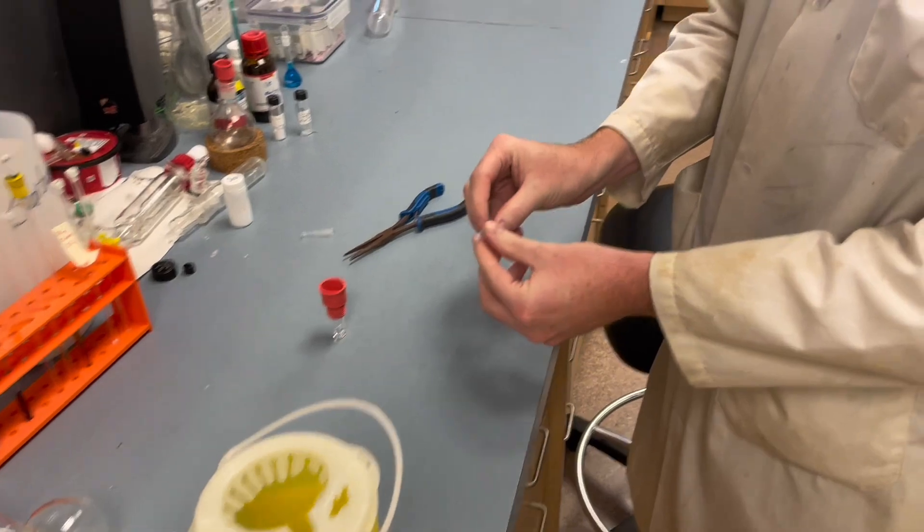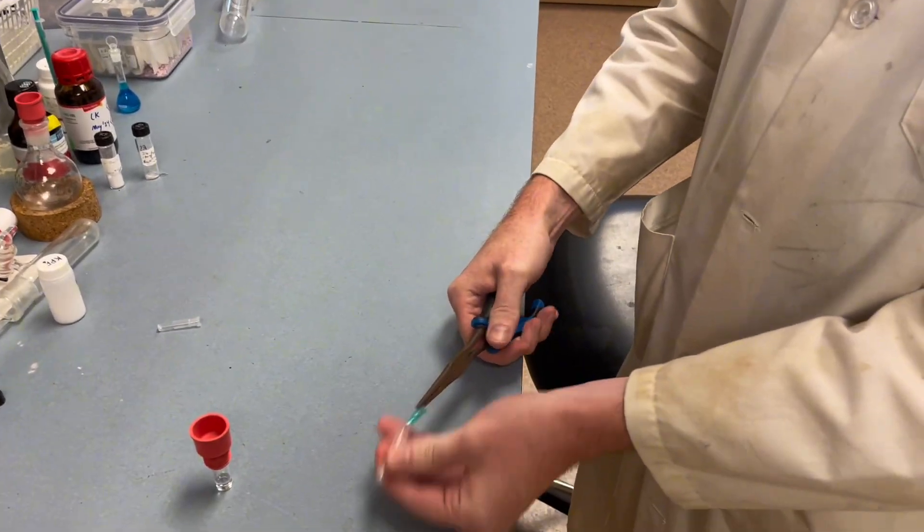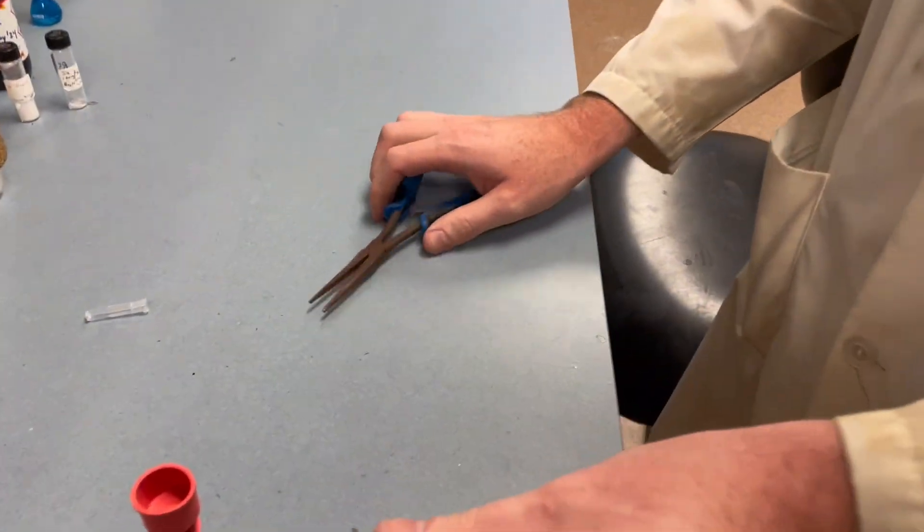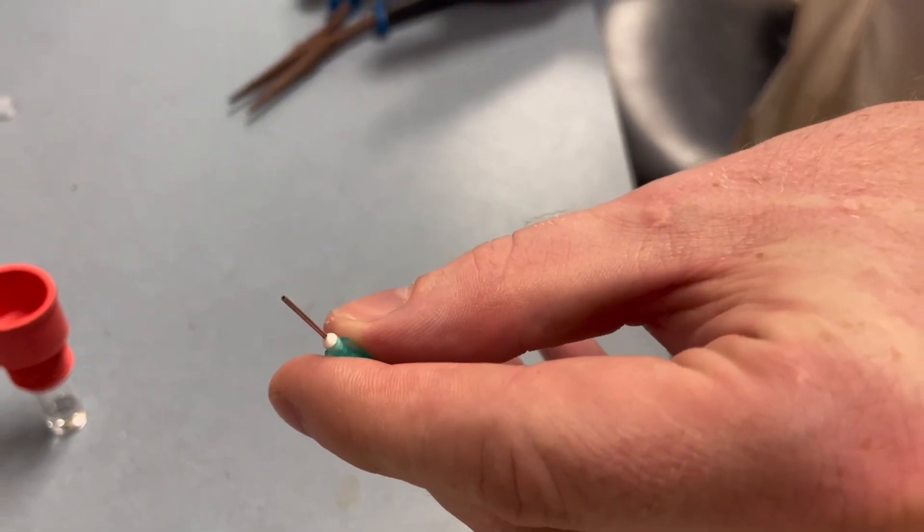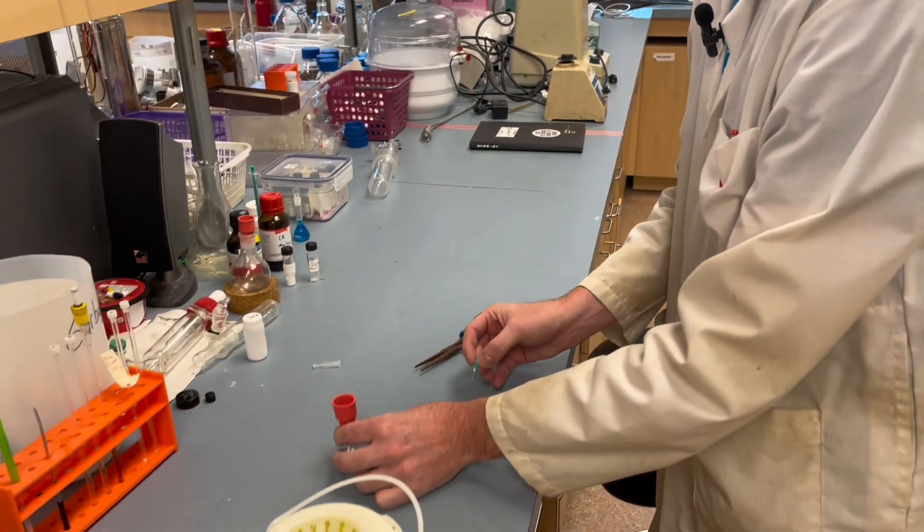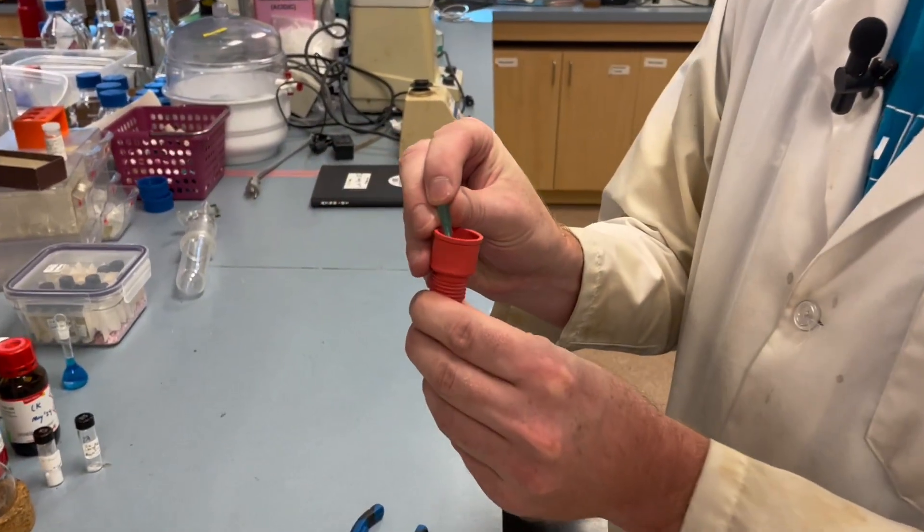Next we'll take our blunt tip needle and stick it through the hole in the septum which we pre-punctured.